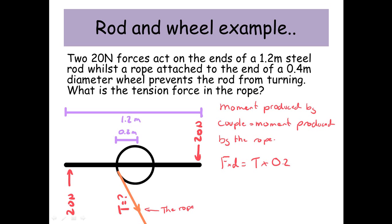It's 0.2 because the distance between the line of action of T and the pivot where this will rotate is half the diameter of the wheel, which is 0.2 meters.